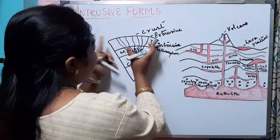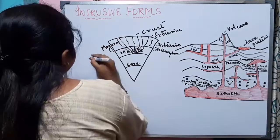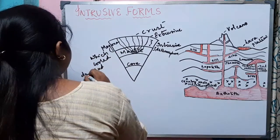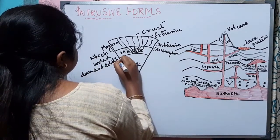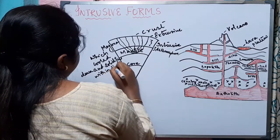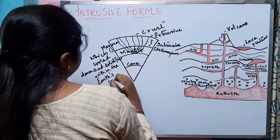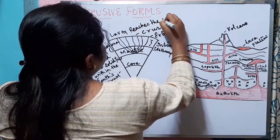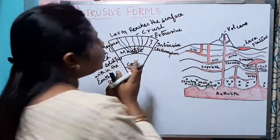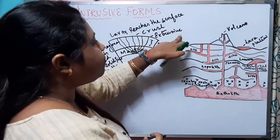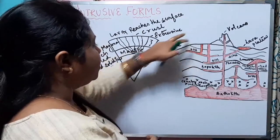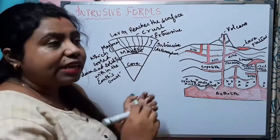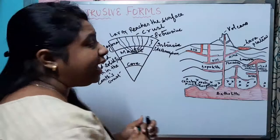Magma that cools down and solidifies within the earth's crust forms intrusive rocks, and lava that reaches the surface and solidifies forms extrusive rocks. Anything formed within the earth's crust is intrusive, and anything formed outside is called extrusive.